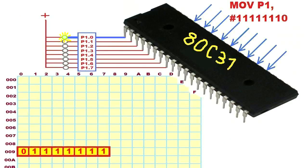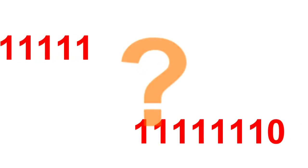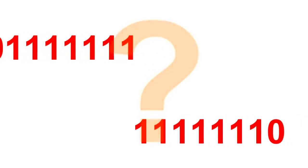Entering a number in register P1 will set the bit P1.0 to logic state 0, bit P1.1 to logic 1, bit P1.2 to logic 1, and the rest of the bits also high — which is why the value is 11111110B and not 01111111B.